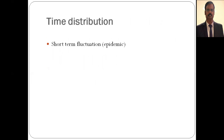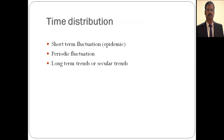Time distribution is classified into short-term, periodic, and long-term. Short-term fluctuation means a sudden increase in number of cases outnumbering expected occurrence, called an epidemic. Periodic fluctuations occur every few months or during particular seasons or climatic conditions. Long-term trends take many years for a disease to emerge and increase in prevalence.